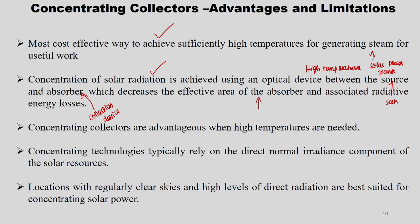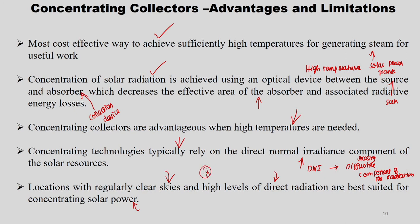Concentrating collectors are advantageous when high temperatures are needed; otherwise, FPC or ETC would be wiser. Concentrating technologies typically rely on DNI — direct normal irradiance — so the diffusive component of radiation is lost. Locations with regularly clear skies and high DNI levels are best suited for concentrating solar power plants. The specific location is also important when using concentrating collectors for any thermal application.